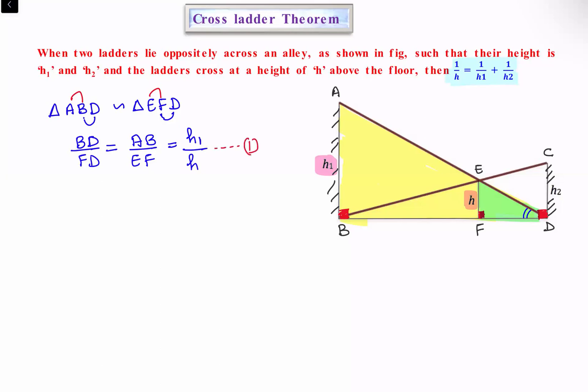Similarly, if we look at the other bigger triangle BDC and triangle BFE, this angle is common and both triangles are 90 degrees, so both triangles are similar. Triangle BDC is similar to triangle BFE.